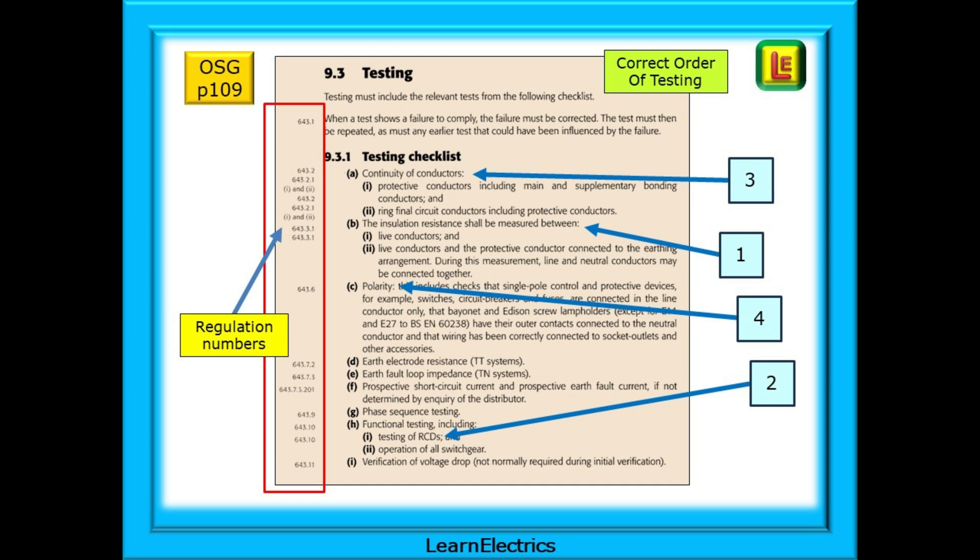If you make use of the on-site guide and look on page 109, you will find a testing checklist in section 9.3. The red box shows the regulations as they also appear in the wiring regulations book, and this is the approved order of testing.